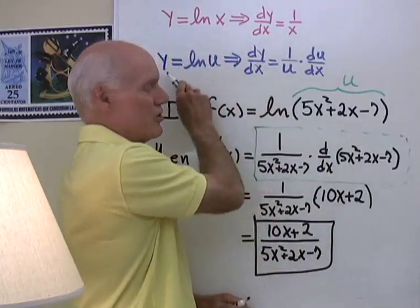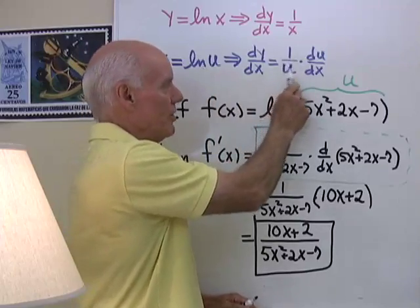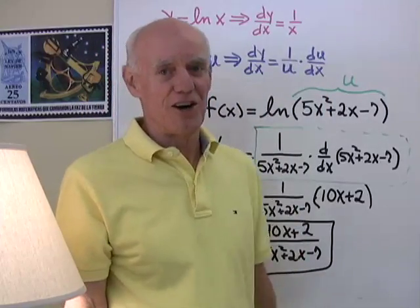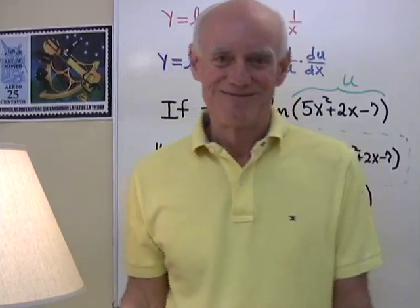So by the chain rule, the derivative of log u, 1 over u times du dx, because we have to differentiate that argument so we don't want to forget that.